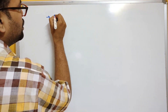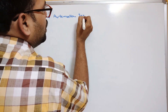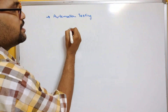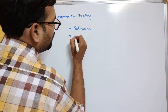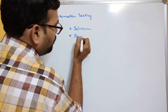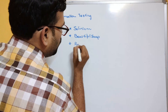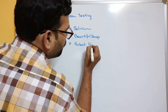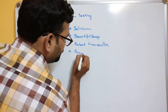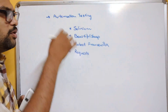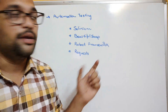For automation testing, the major libraries are: Selenium, Beautiful Soup, Robot Framework, and Requests. These libraries are used for automation and testing purposes.